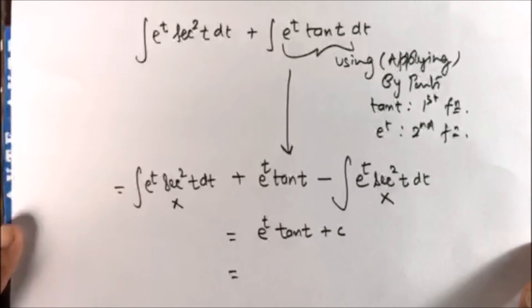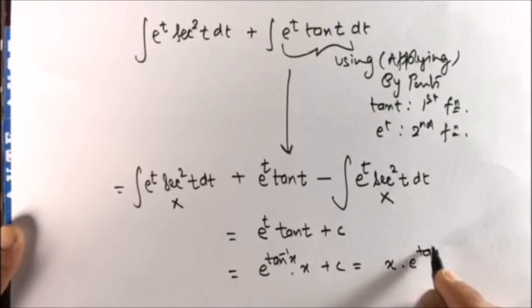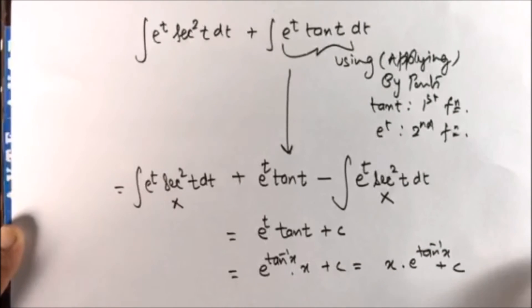Do you remember that t is tan inverse of x and tan t is x? So what is the answer? The answer is e to the power tan inverse of x times x plus c. This expression looks good. So the answer is x into e to the power tan inverse of x plus c.